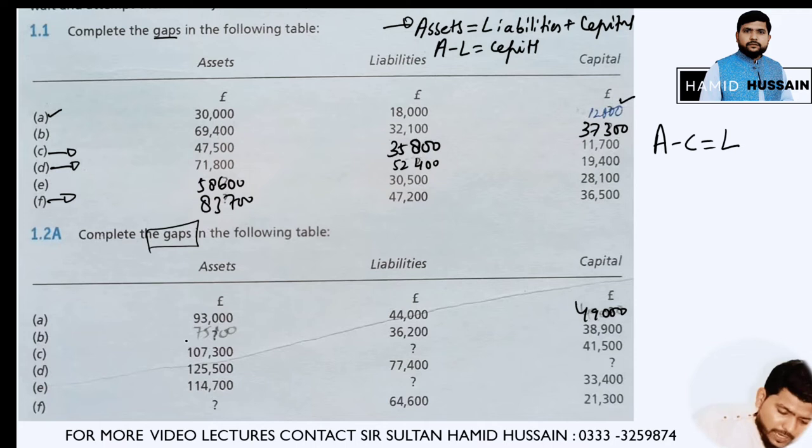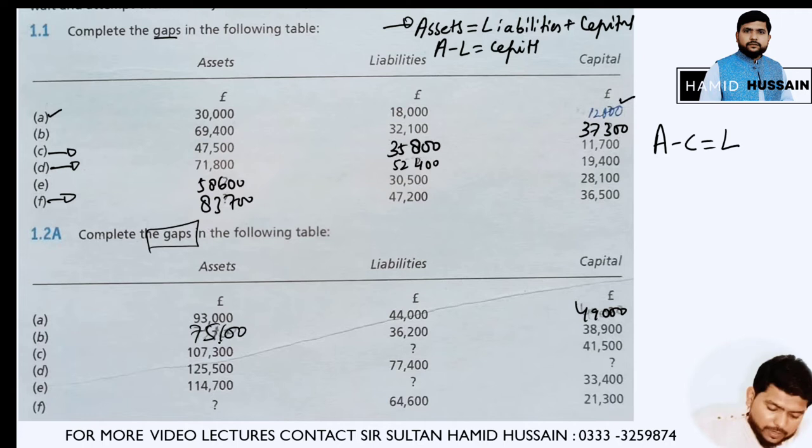In part B, you need to find out assets. You need to add liabilities plus capital, and you will get assets, that is 71,500.